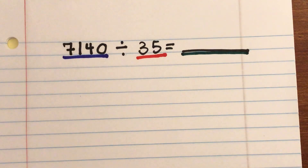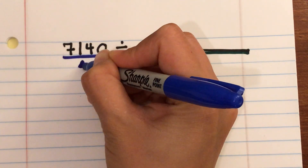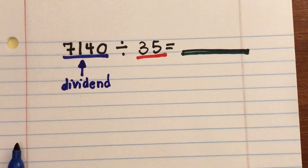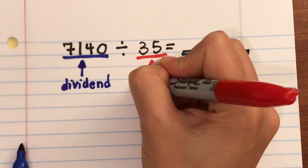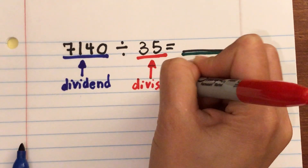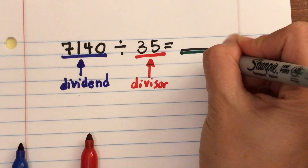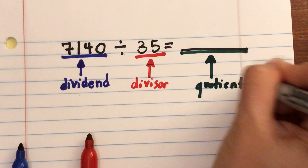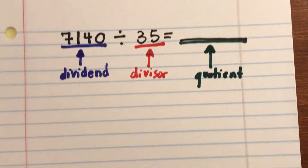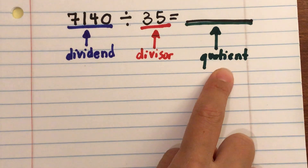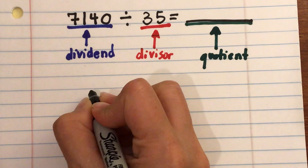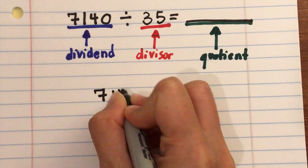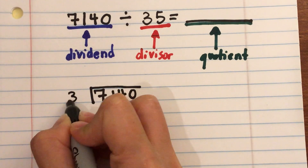The first number, 7,140, is always going to be the dividend. The second number, 35, is the divisor — you're dividing the dividend by it. The answer to a division problem is the quotient. With partial quotients, you're finding parts of the quotient before arriving at the final answer.